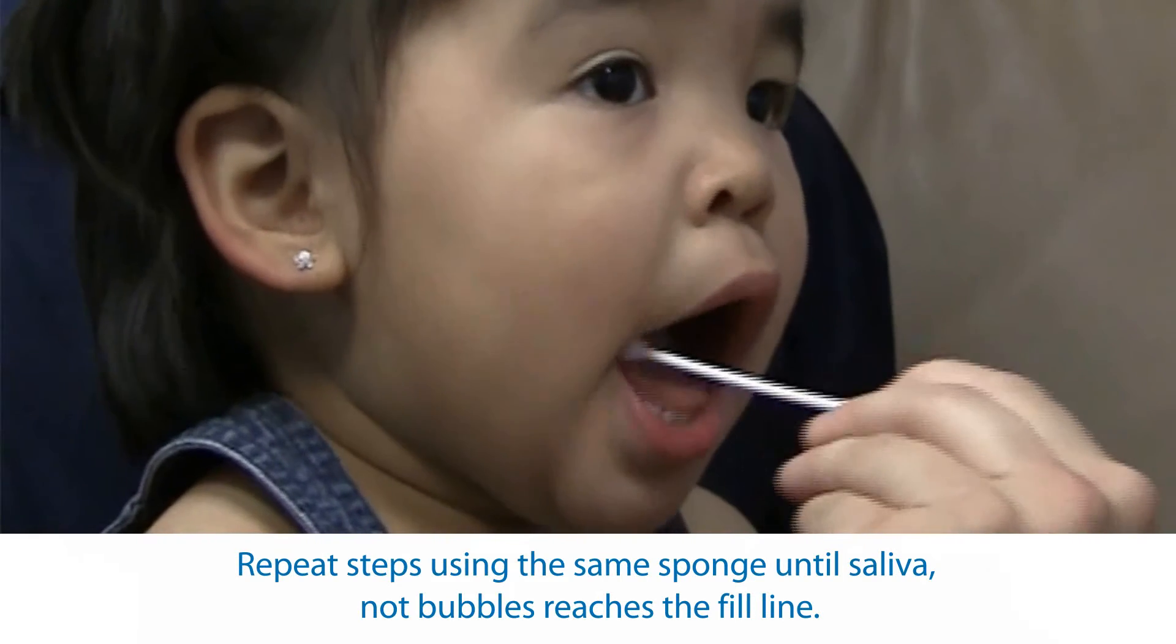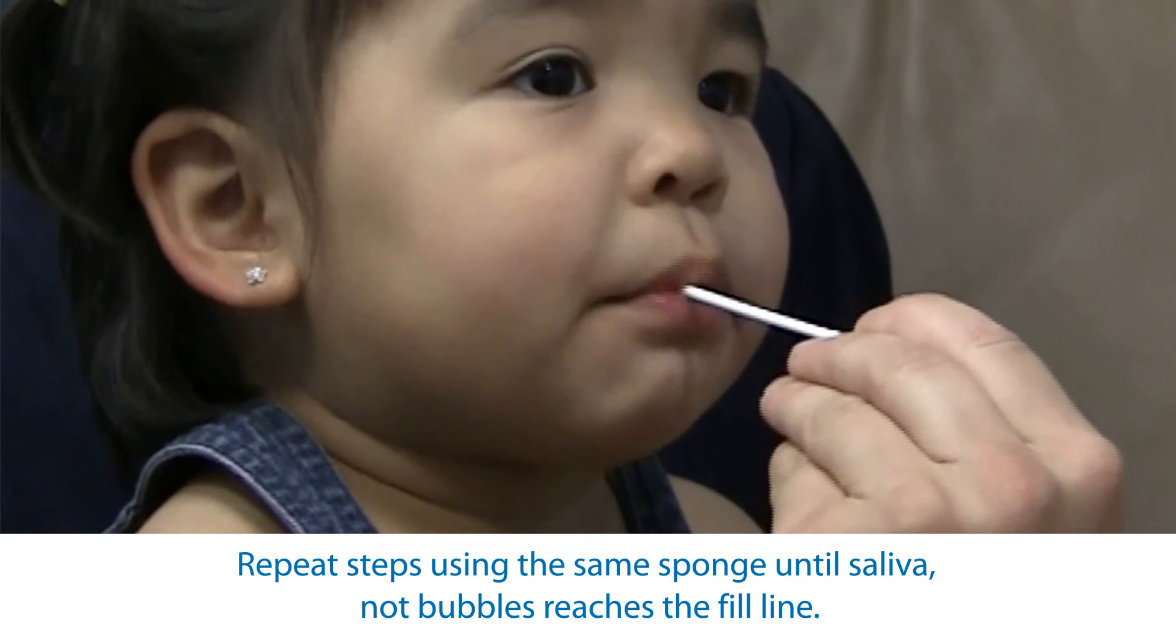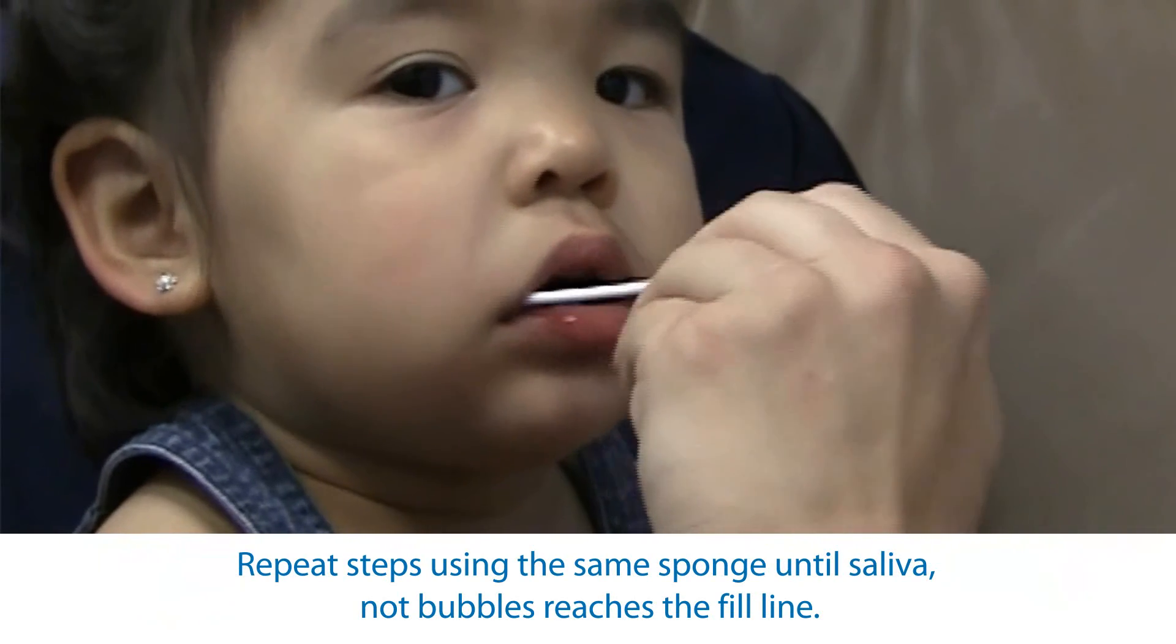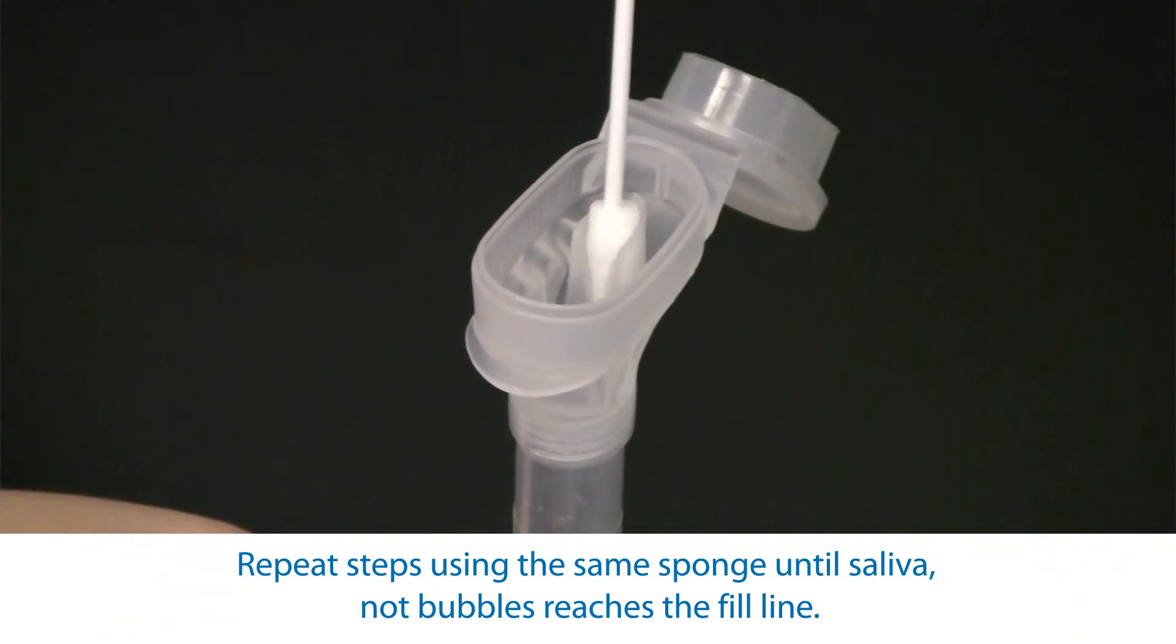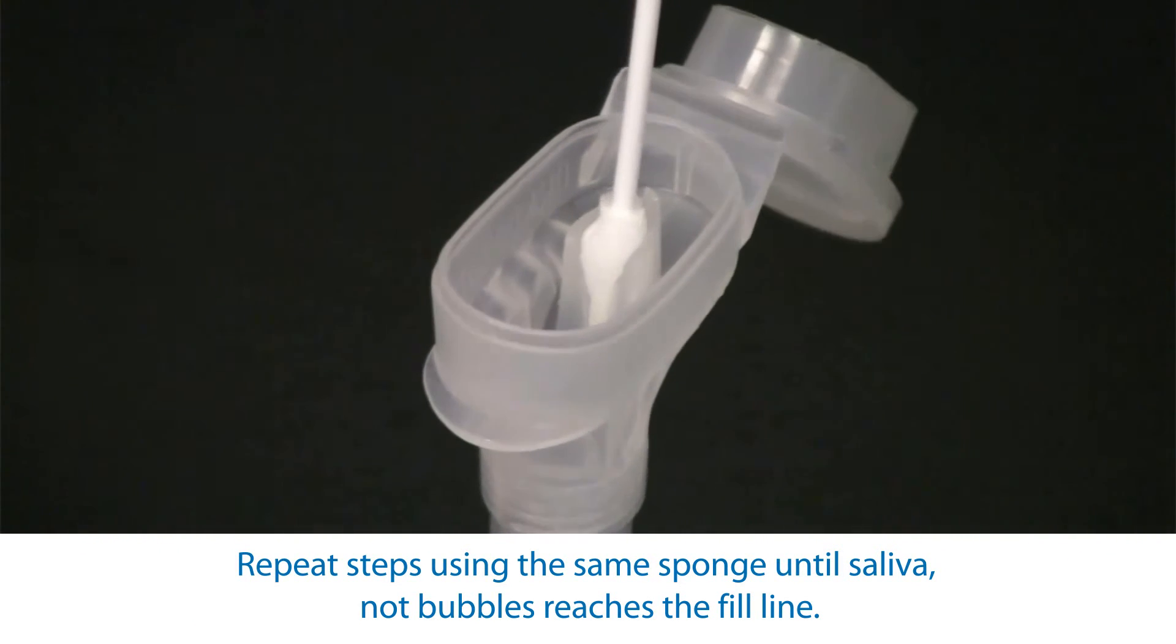Repeat these steps using the sponge until saliva, not bubbles, reach the fill line. Check sponge for damage each time before inserting into the donor's mouth. Replace with spare sponge as needed.